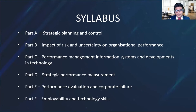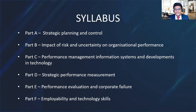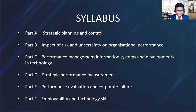Then comes Syllabus Part B, which is the smallest syllabus area. Part B covers the impact of risk and uncertainty on organizational performance. This is where we learn about what risk and uncertainty are, and how we can make decisions when there is risk or uncertainty within our business environment — including familiar topics like the maximin and maximax approaches, simulation models, and other decision-making techniques.